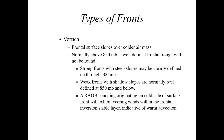In the vertical, a warm frontal surface is going to slope over the colder air mass closer to the ground. This has to do with density differences — warmer air associated with warm fronts creates an overrunning situation where that warm moist air rides up and over, being less dense, over the colder surface air. Generally if you go above 5,000 feet above the ground, a well-defined frontal trough cannot be found anymore. But strong fronts with steeper slopes may be clearly defined up through 18,000 feet or 500 millibars, while weak fronts with shallow slopes are normally best defined at 5,000 feet and below.